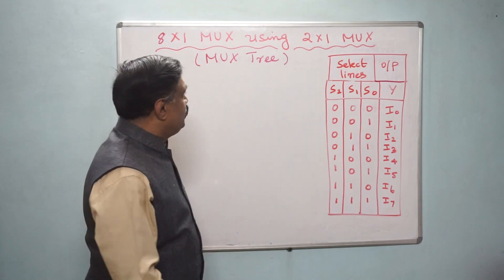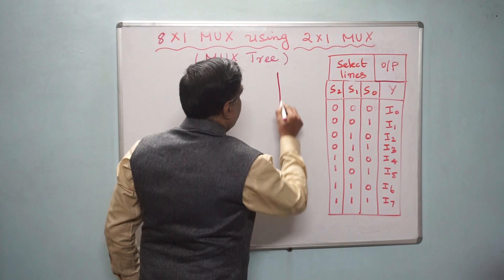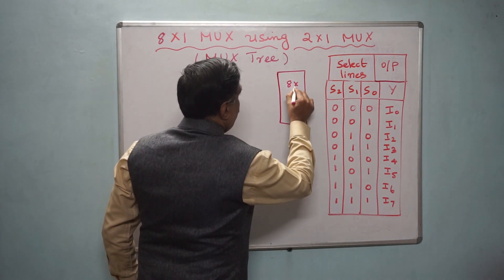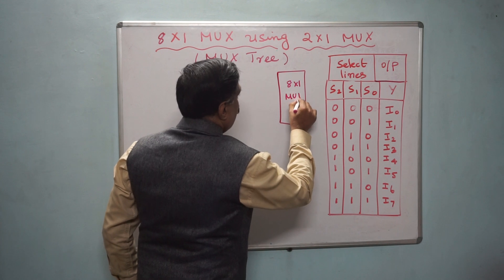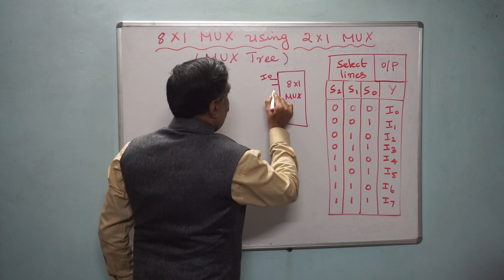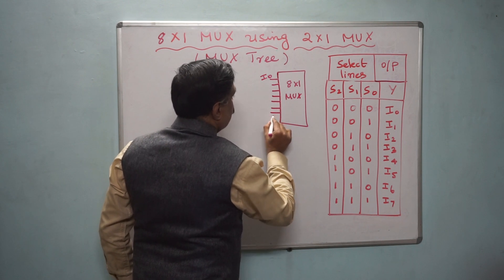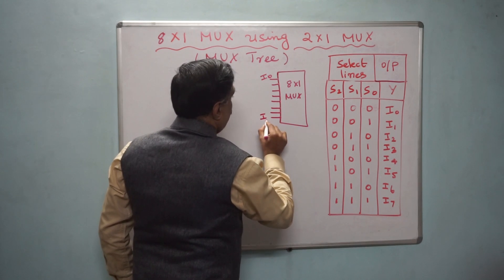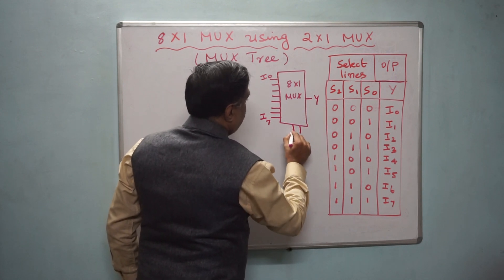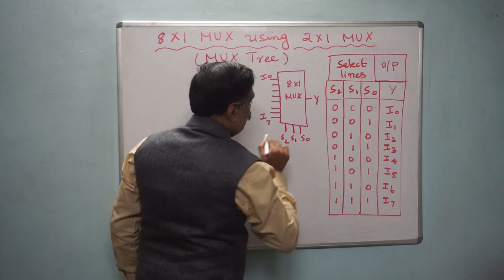Now, 8 by 1 MUX — I will draw it again. This is the 8 by 1 MUX with inputs i0, i1, i2, i3, i4, i5, i6, i7, one output, and select lines S0, S1, S2.